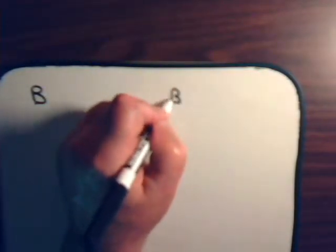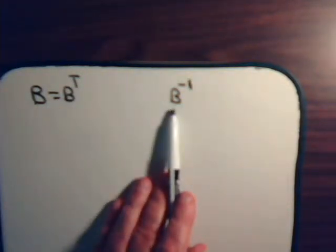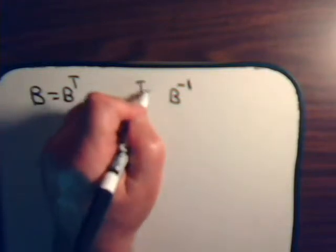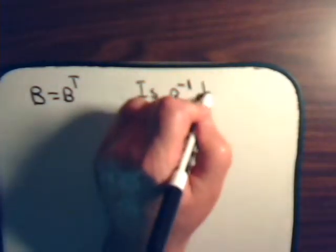Before we consider whether the projection matrix is symmetrical or not, let's say that we have a matrix and that it is non-singular, so that its inverse exists. And our matrix not only is non-singular, but is also symmetrical. So if our non-singular matrix is symmetrical — it equals its transpose — what about its inverse? Is that also symmetric?